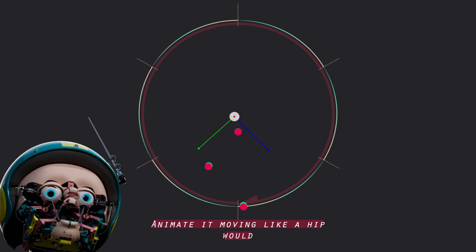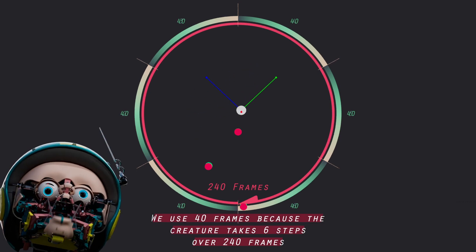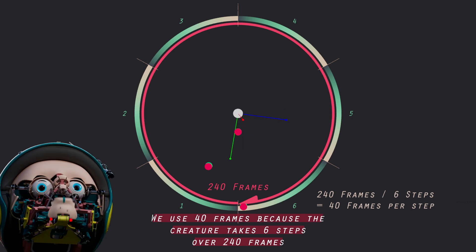Animate it moving like a hip would, and loop that animation every 40 frames. We use 40 frames because the creature takes 6 steps over 240 frames.